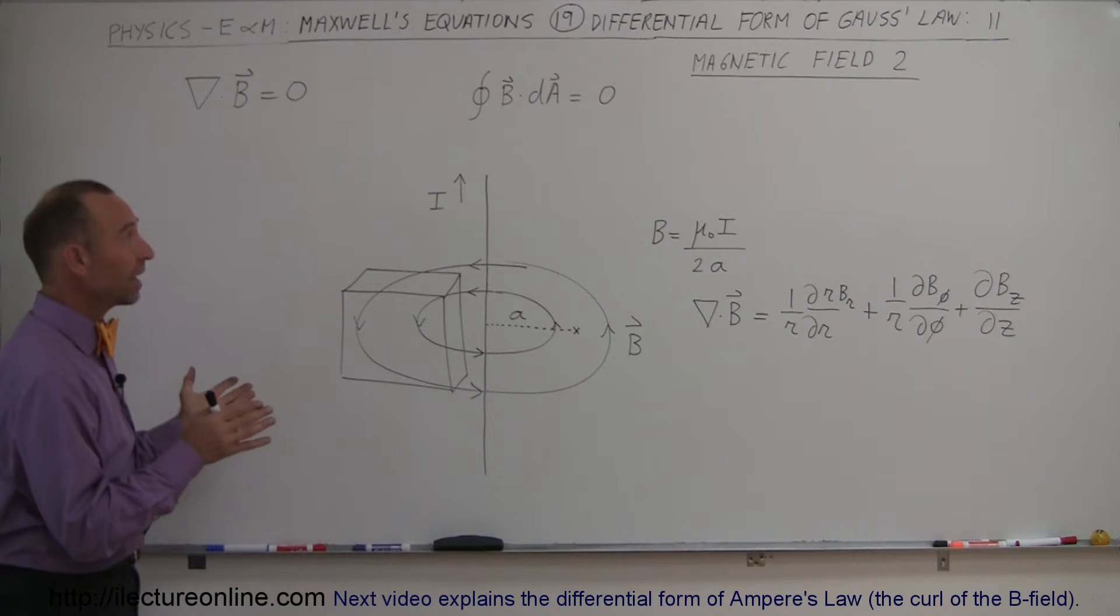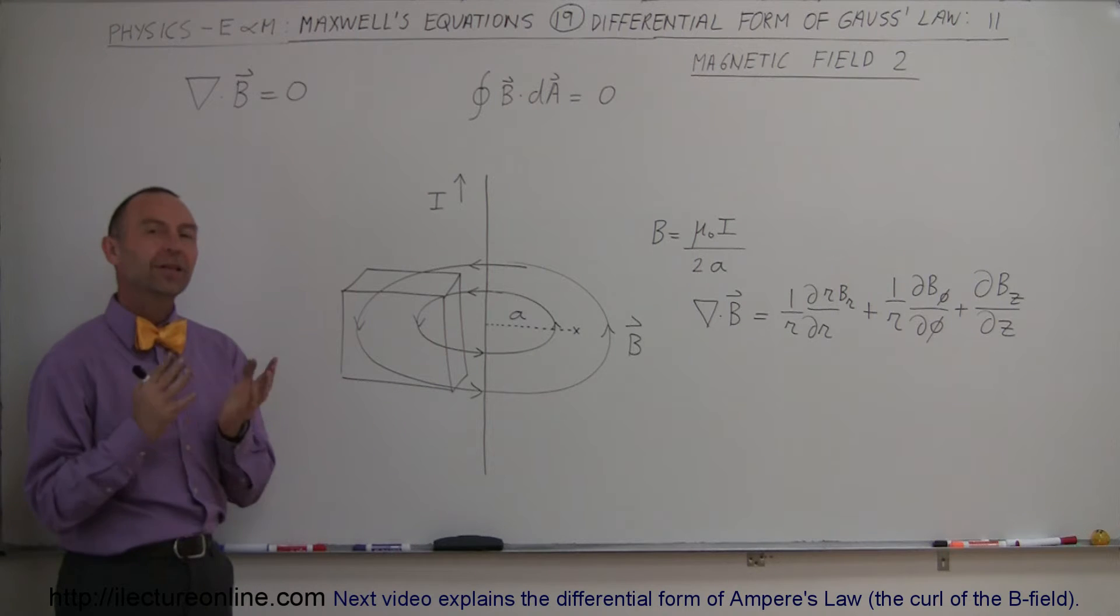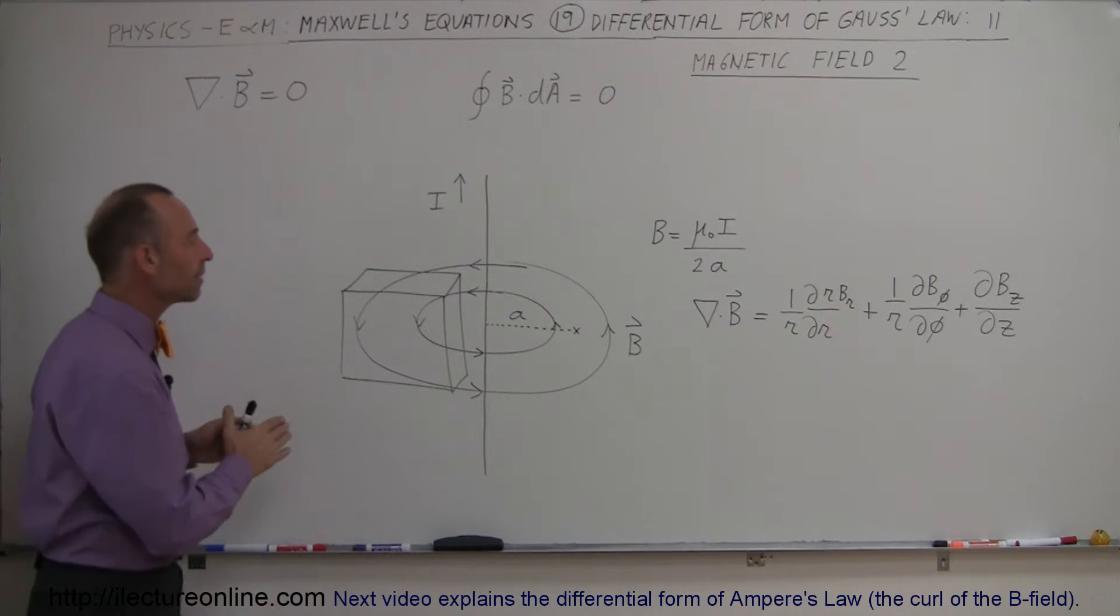Welcome to ElectronLine and to get a better understanding of Gauss's law for magnetism, we're going to do a second example. In this case the magnetic field is created by a current.